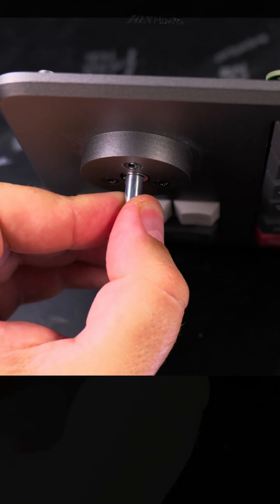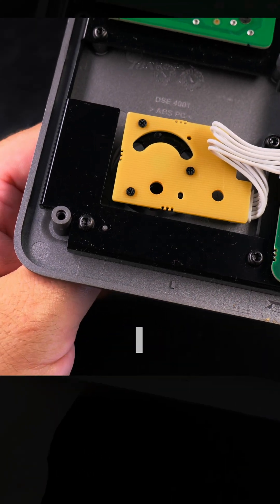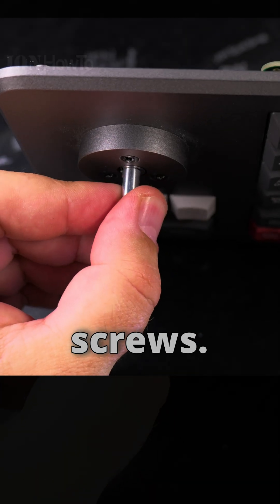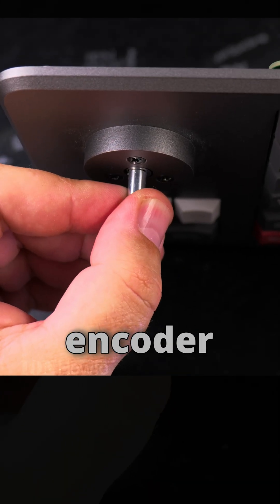You see how it's moving. I thought before that it's some of the screws that are loose, but it's not the screws, it's the actual encoder itself.